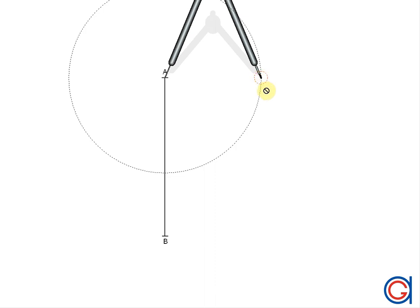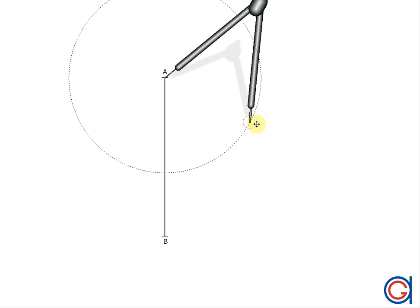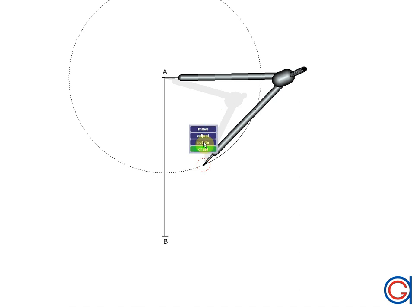Setting our compass on point A, we are going to scribe two small arcs. We only draw small arcs in order to keep the drawing neater and less cluttered, as can be seen here.